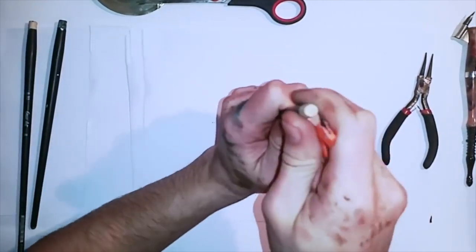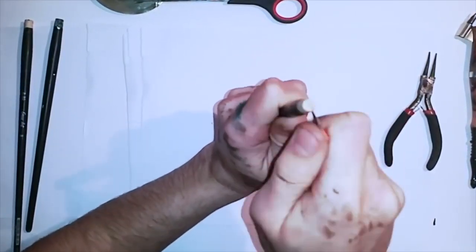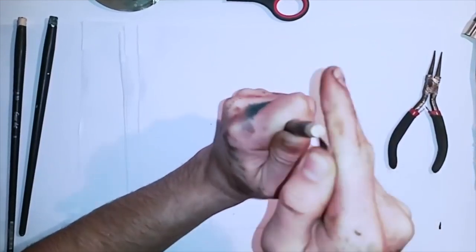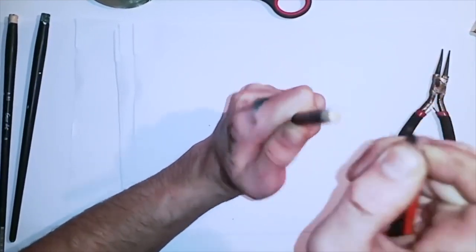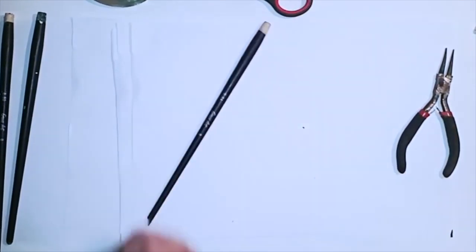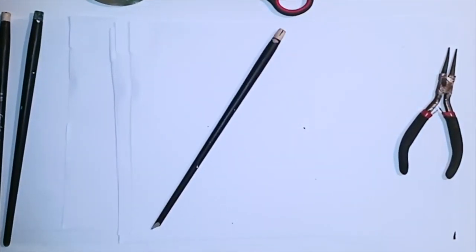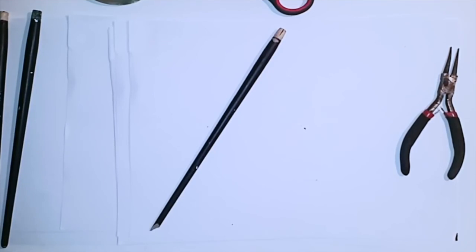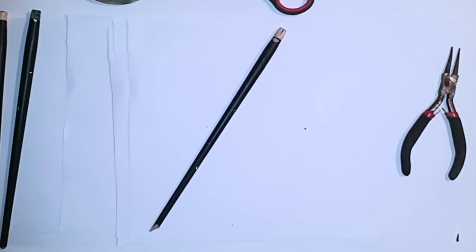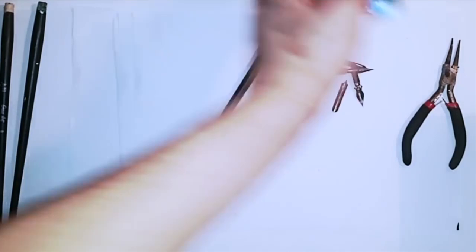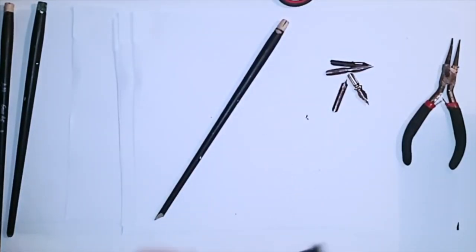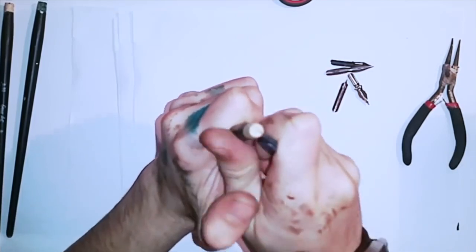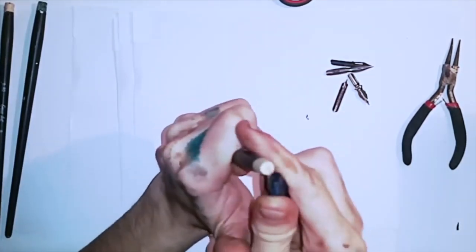This is maybe the hardest part from everything about making this oblique pen holder because it takes some time to cut deep and to make space for the metal part which you're gonna add later. Simply cut thin and keep cutting.